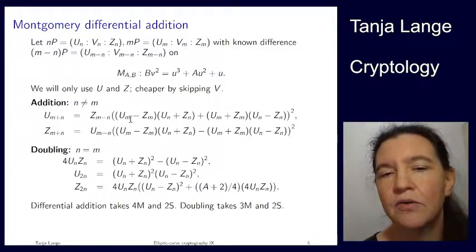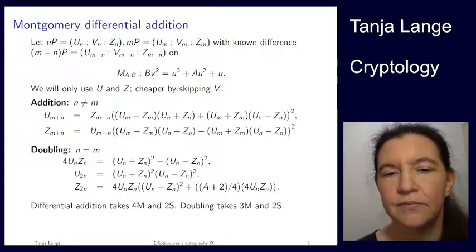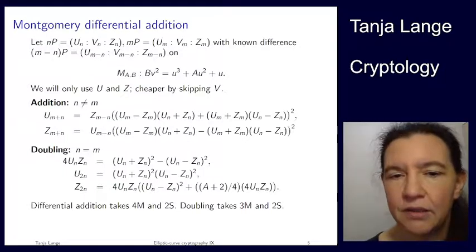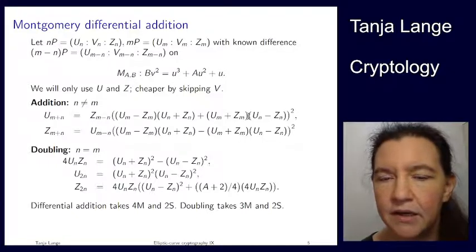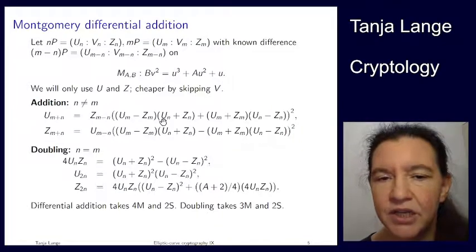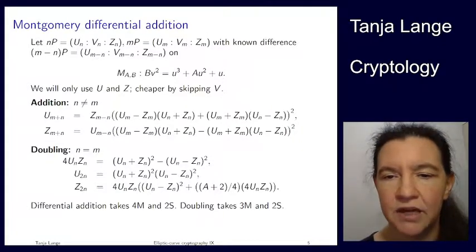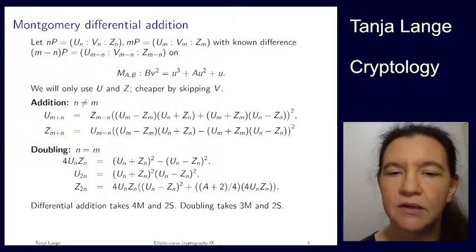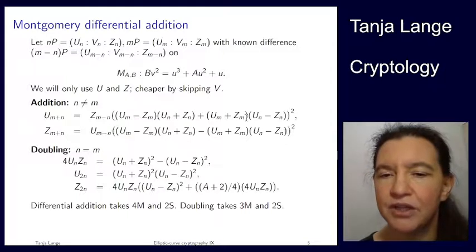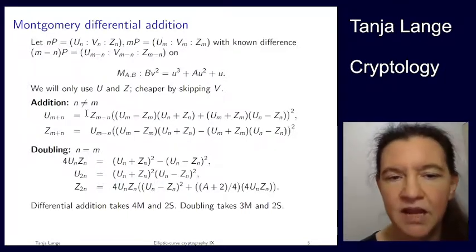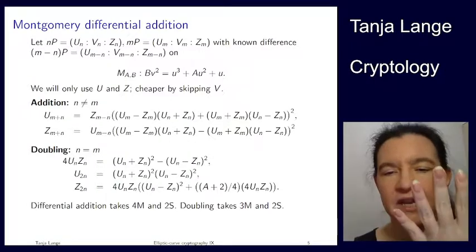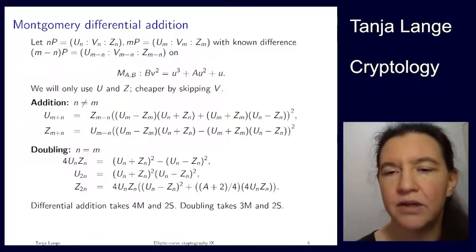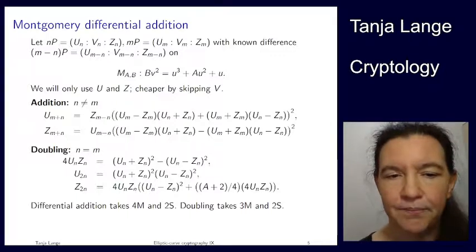And then here we have the coordinates of the other two points. So this is of the n times p and of the m times p. Now when we look at how many operations we actually need, then we see one multiplication here, one multiplication there, a squaring, but then there's another multiplication here. But if you look, this is actually the same as in the previous slide. So the additional part has one multiplication here, one multiplication there, another multiplication here times the z m minus n, a multiplication times the u m minus n. So this is four multiplications and two squarings. The contents of these two squarings are not the same, so we have to do both of them.